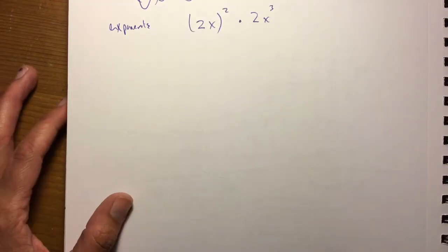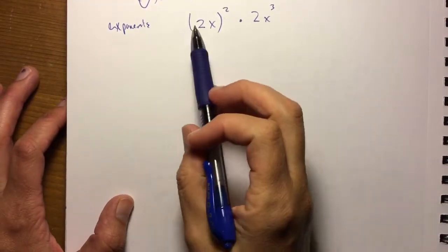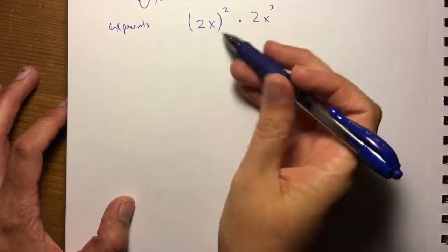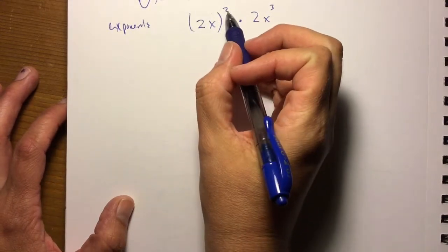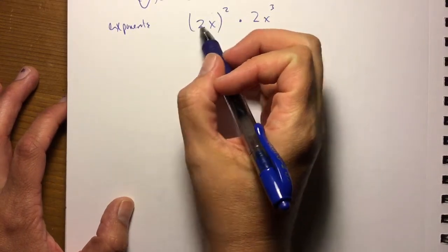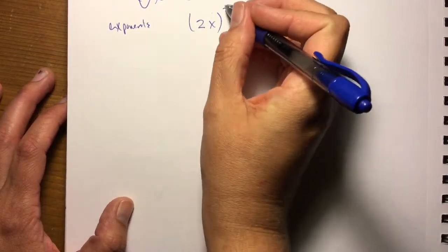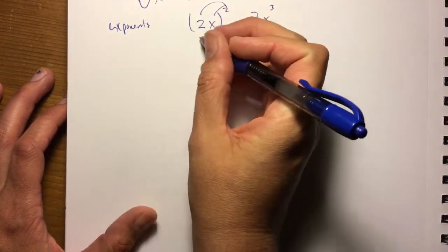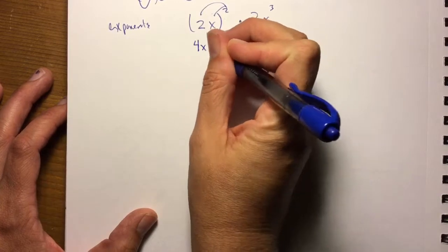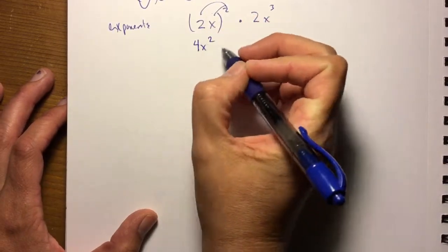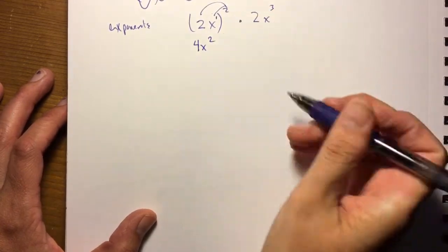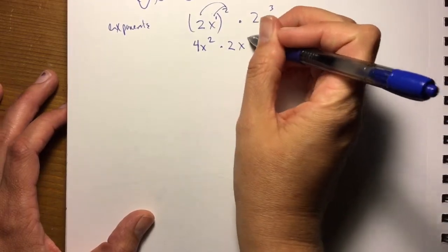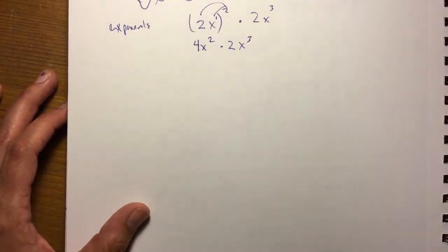Let's talk about exponents. Starting with something like 2x squared times 2x cubed. If you have parentheses and an exponent, you're going to multiply. So let's do that first — you're going to square the 2 and the x, so you get 4x squared, because it's like this has a 1 times 2. But then we still have this 2x to the third outside of it.